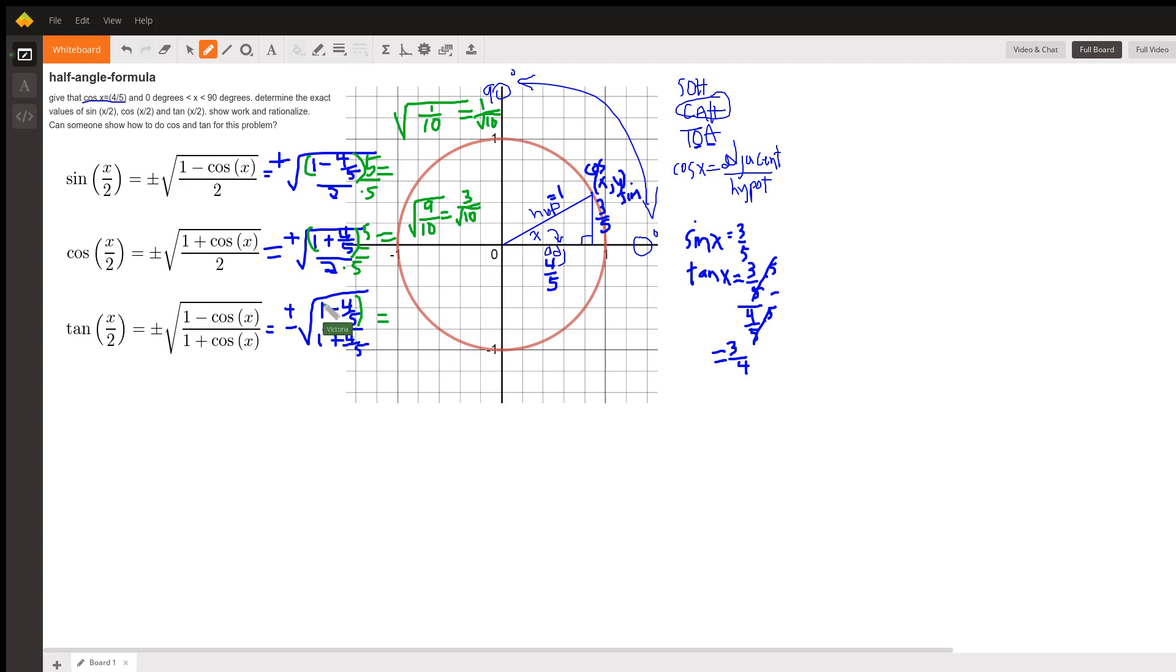And then this one, if you multiply this top, tangent, if you have positive over positive, the sine is positive. And so if you multiply top here by 5 and bottom here by 5, you get 5 minus 4 is 1, and you get 5 plus 4 is 9, and you're taking the square root, and that equals 1 third.